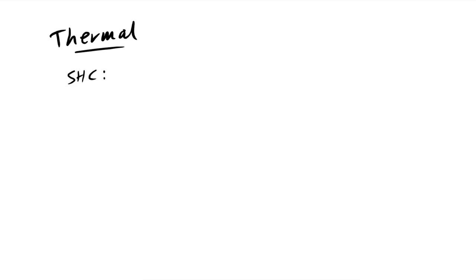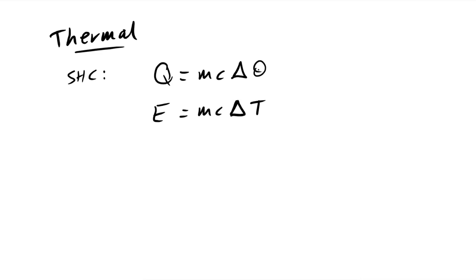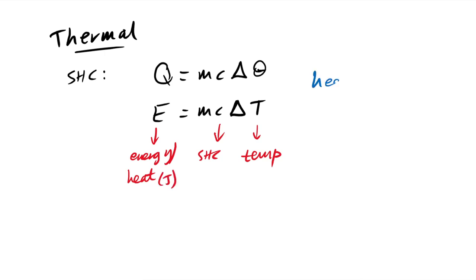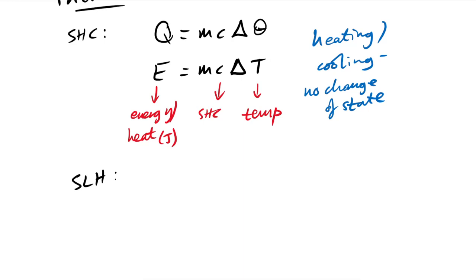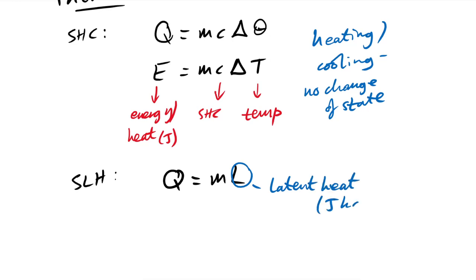For thermal physics, specific heat capacity: Q = mcΔT (or mcΔθ), where Q is heat energy in joules, m is mass, c is specific heat capacity in J/(kg·K), and ΔT is the temperature change. This applies when heating or cooling with no change of state. For changes of state, use the specific latent heat equation: Q = mL, where L is specific latent heat in J/kg.